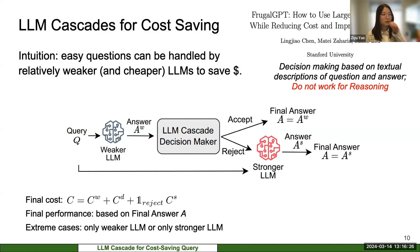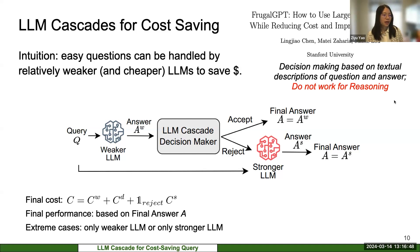The idea of LM cascade was not proposed by us — it was first proposed by researchers at Stanford in a framework called FrugalGPT. But their work focused on factoid question answering rather than mathematical reasoning. Their cascade decision maker utilized textual hints and descriptions of questions and the initial answer from the weaker LM, which works well in factoid QA but doesn't work well in arithmetic and mathematical reasoning problems, which is the topic we are more interested in.